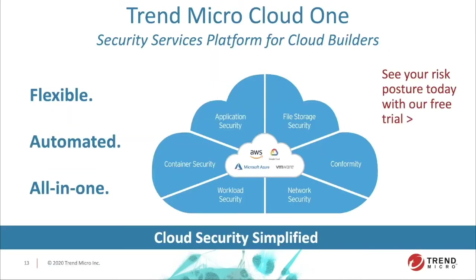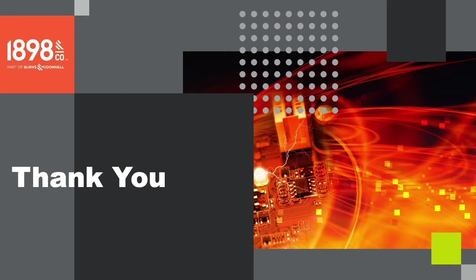Conformity is part of a much wider security suite called Cloud One. Trend Micro has brought together in a single platform all sorts of cloud security capabilities: scanning S3 buckets for malware, a network intrusion prevention system, securing workloads on EC2s, scanning and securing containers, and automatically protecting applications against common web-based attacks and zero days.